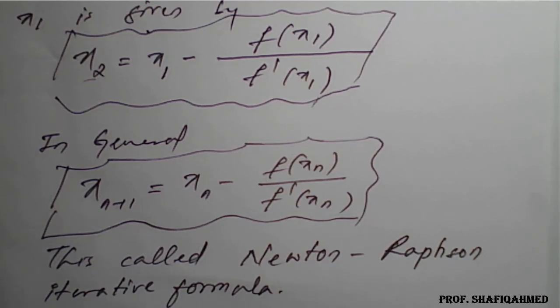This applies to transcendental and polynomial equations under numerical methods. This is the best method to get approximate results of given equations under the Newton-Raphson method. We will see problems based on this method.